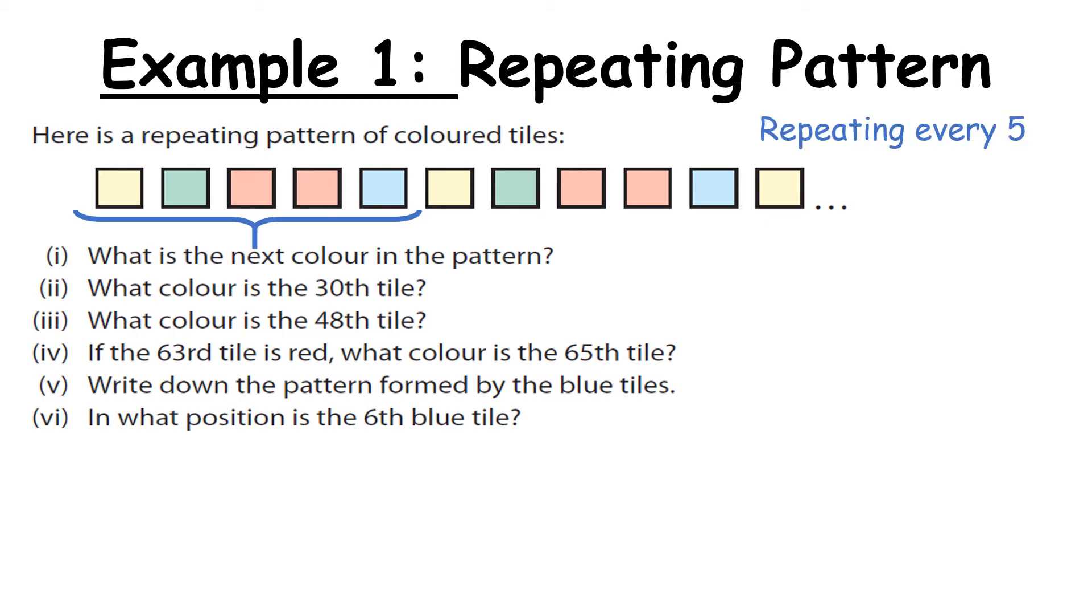So the first question is what is the next colour in the pattern? So it ends on a yellow. After the yellow comes green. The second question then says what colour is the thirtieth tile? So what we're going to do is we're going to label the colours based off the remainders. So yellow will be remainder one, green will be remainder two, the next red will be remainder three, the second red remainder four, and blue will mean no remainder. Remember when we're doing this sum we're going to divide by five because this pattern repeats every five. So thirtieth tile we do 30 divided by five. It gives us six remainder zero which tells us that this colour is blue.